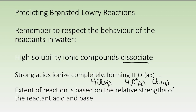We also have something called an extent of reaction that is predicted, which goes along with equilibrium. If your strongest acid and strongest base are in positions of strength on the table, the reaction favors the products. If your strongest acid and strongest base are in positions of weakness, then we would say that the reaction favors the reactants.